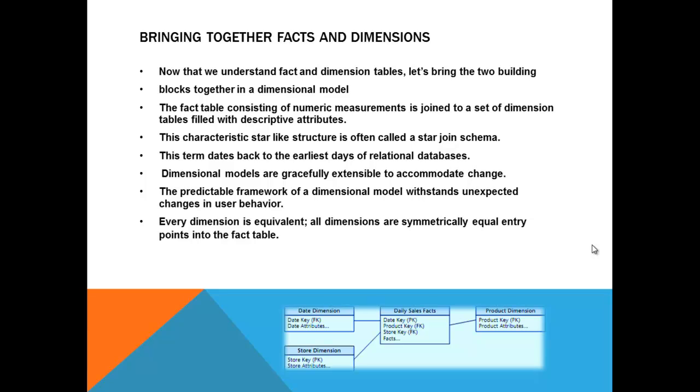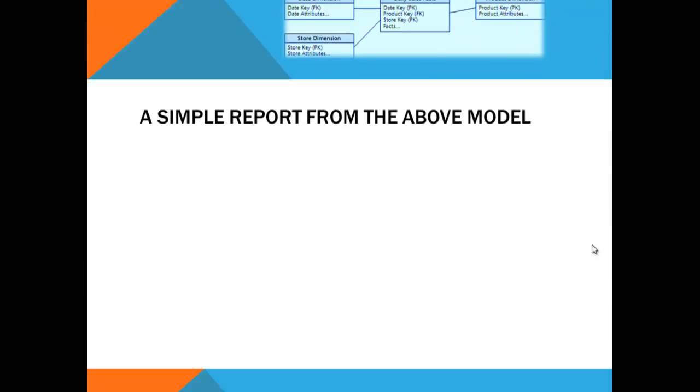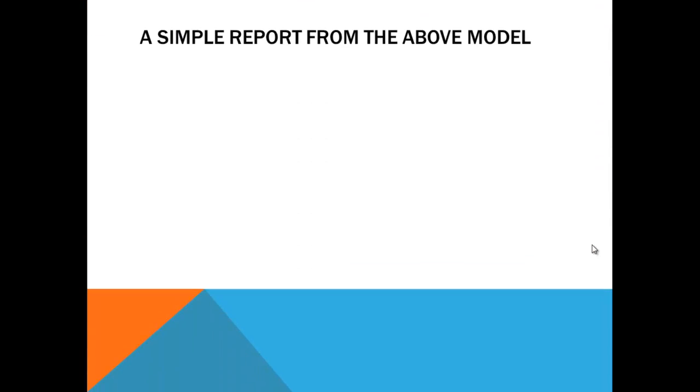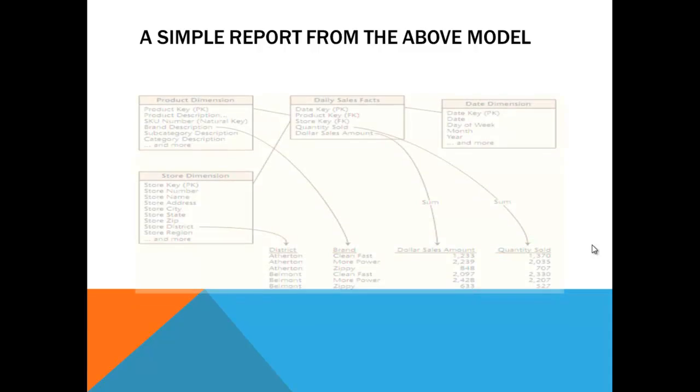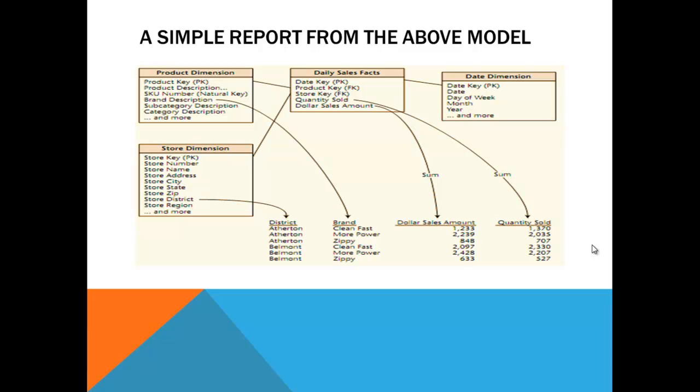That is the dimensional model we were talking about. There is one more table which will come up. We will look at the model in detail. But a simple report from the above model, whatever so far we have seen, the purpose of building this entire model is for this report. You will understand what is the dimensional model now. Now you see it. We have generated a simple report. What is the report saying? It is giving you sales by district by each brand. What is the dollar amount sold? What is the quantity sold? This is a simple report. But to get out this report from an operational system is not possible.